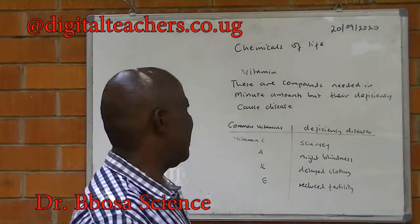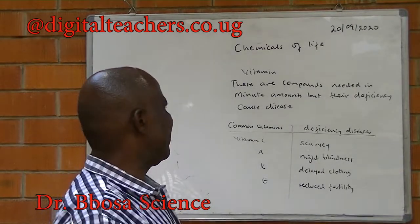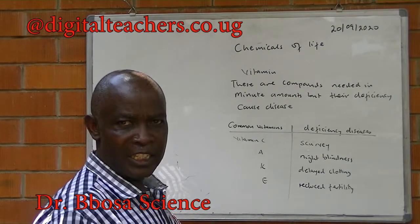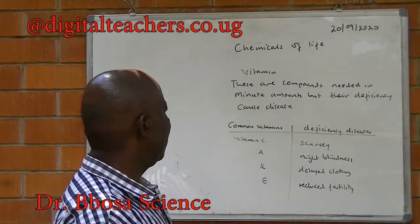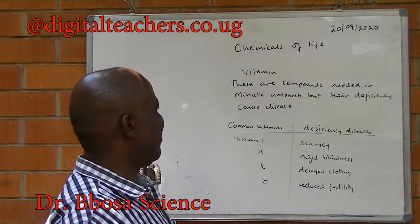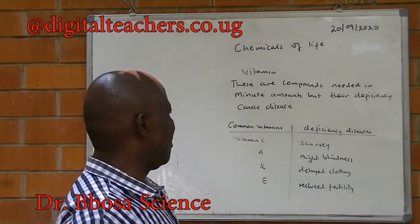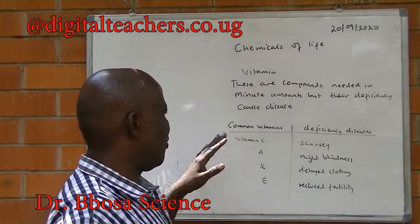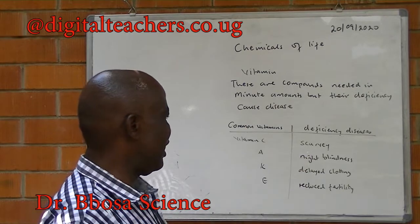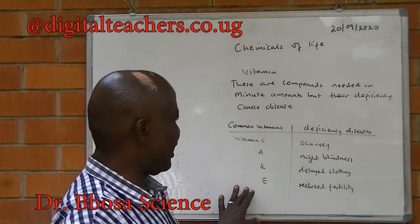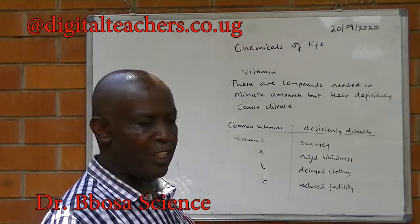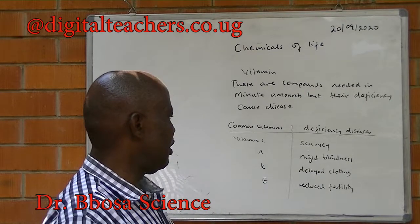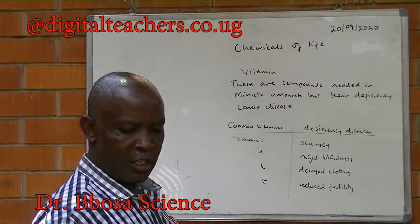Finally, we look at vitamins. These are compounds needed in minute amounts, but their deficiencies cause diseases. Some common vitamins and their deficiency diseases include: vitamin C causes scurvy, lack of vitamin A causes night blindness, lack of vitamin K causes delayed clotting, and lack of vitamin E leads to reduced fertility.